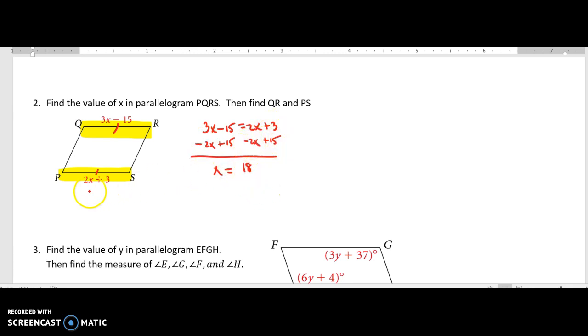And now if I wanted to find the measure of the sides, I just come substitute 18 in for X. 36 plus 3, this would be 39, which would make this 39.